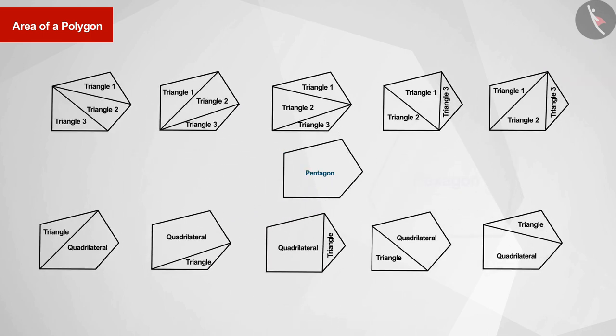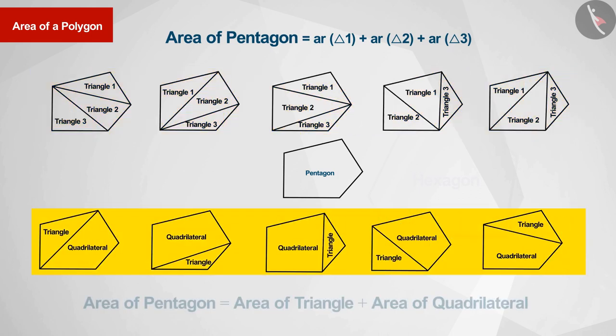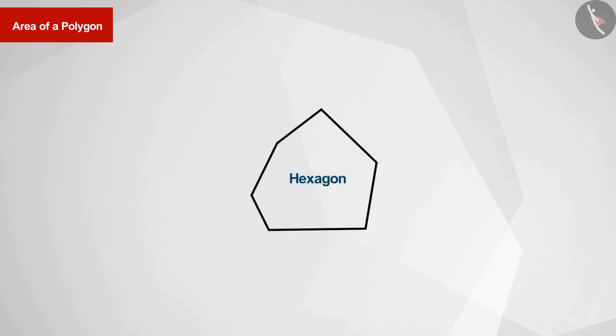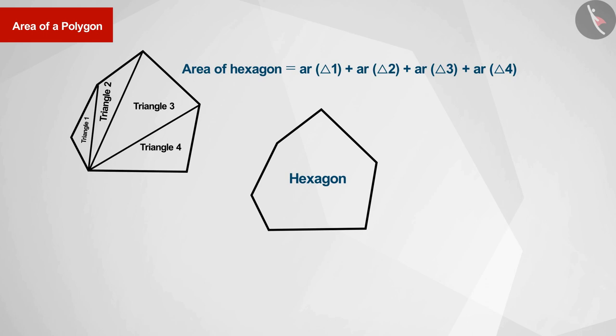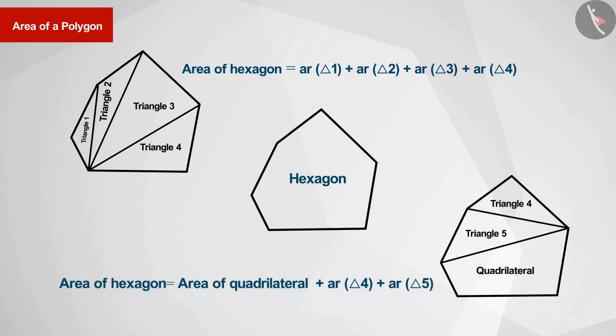Perfect. The pentagon is thus divided into three triangles, or its area can be found by dividing it into a triangle and a quadrilateral. And the hexagon is thus divided into four triangles, or one can find its area by dividing it into two triangles and a quadrilateral.